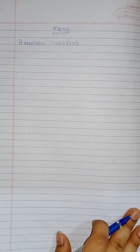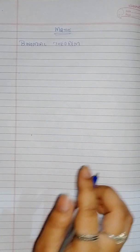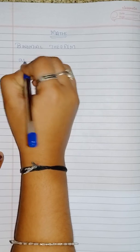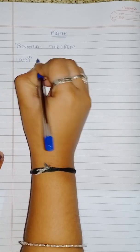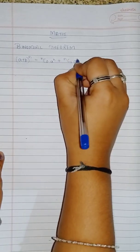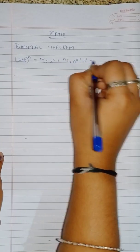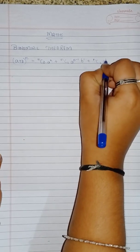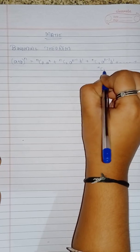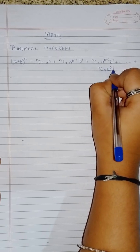Now let's see the fine mark derivation — an important derivation from the binomial theorem. They will ask us to state the binomial theorem and prove it. The statement of binomial theorem is: (a + b)^n = nC0·a^n + nC1·a^(n-1)·b^1 + nC2·a^(n-2)·b^2 + ... + nCn·b^n. This is the statement of binomial theorem. So let's start proving it.